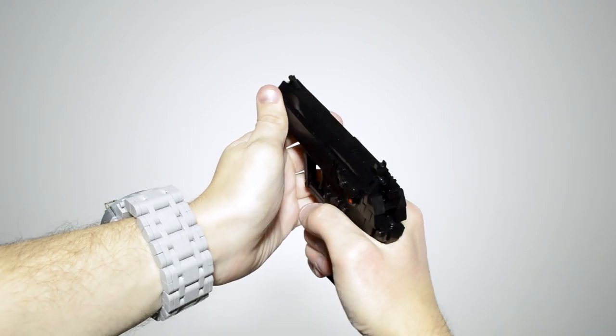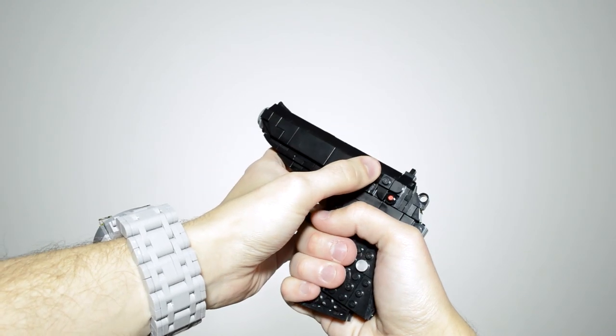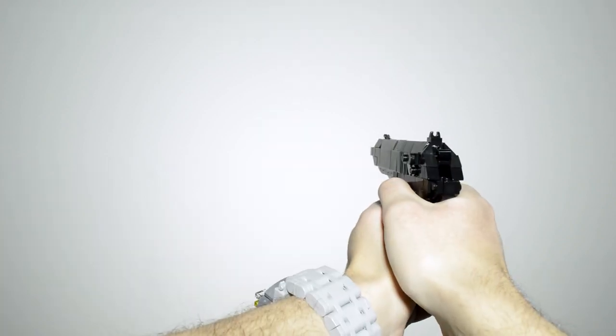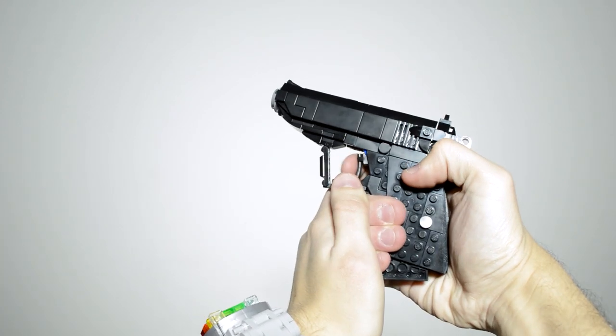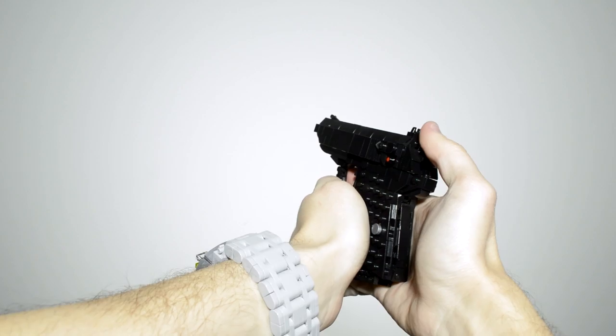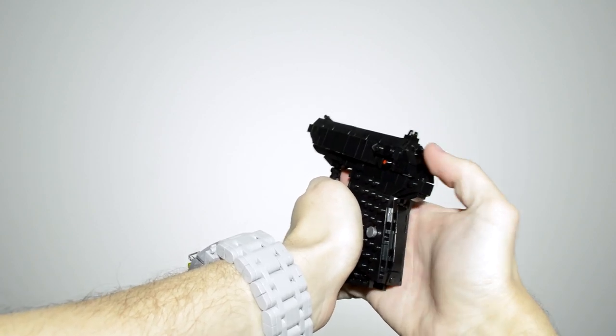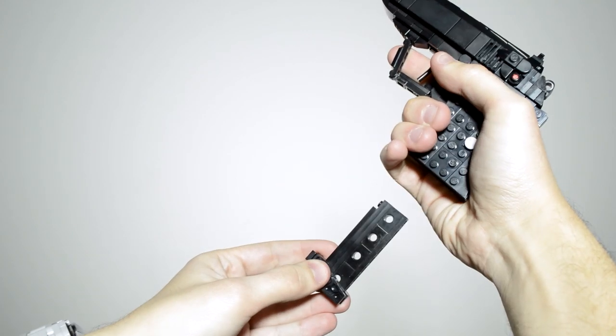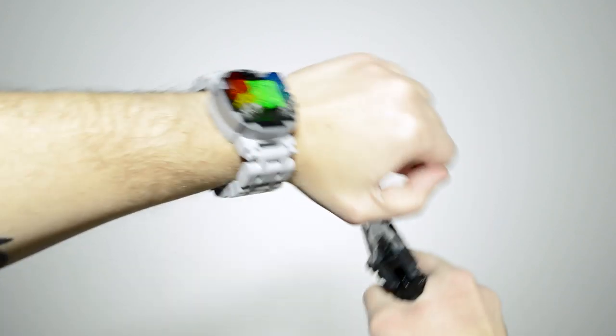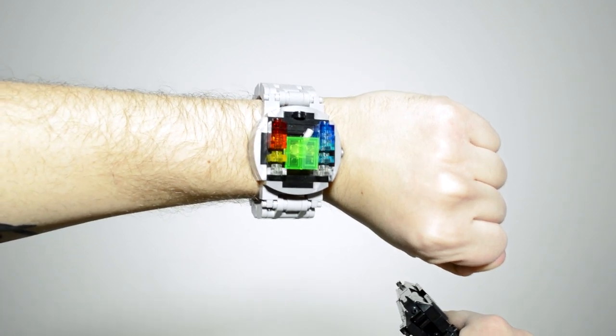Even at this tiny, easily concealed size, this Lego PPK has a few functions that were definitely hard to pack in. These functions include a moving trigger, moving hammer, and a removable magazine. Also, as you can see, the Q watch is wearable.